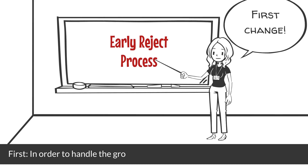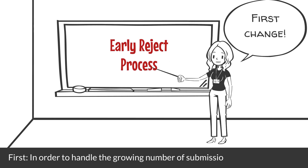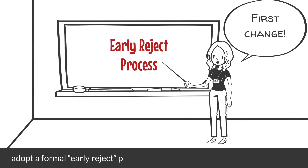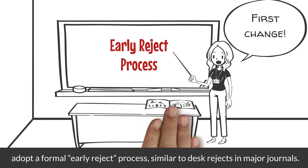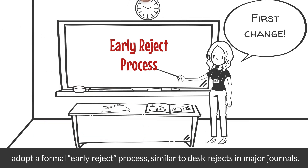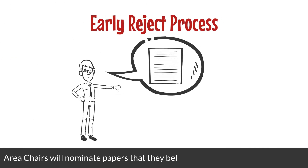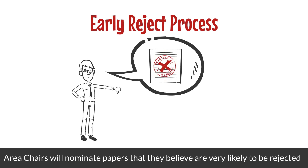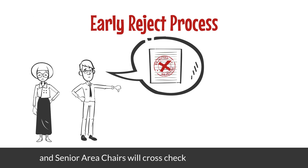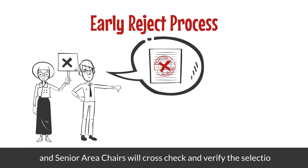First, in order to handle the growing number of submissions, this year we will adopt a formal early reject process similar to desk rejects in major journals. Area chairs will nominate papers that they believe are very likely to be rejected, and senior area chairs will cross-check and verify the selections.